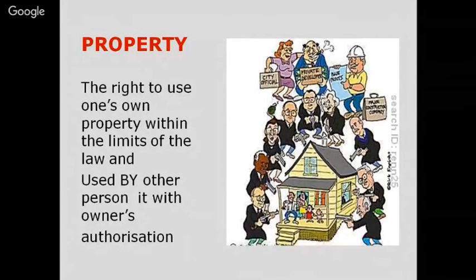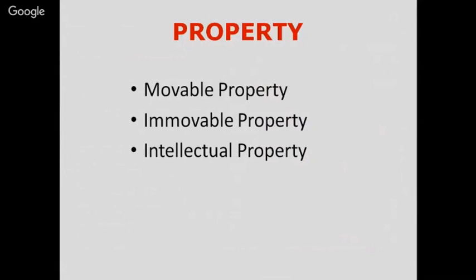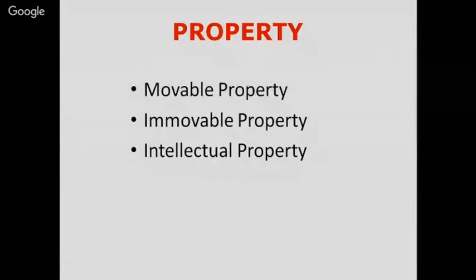Similarly, intellectual property is given the same rights. Property can be categorized into three parts: movable property, immovable property, and intellectual property. Movable property mainly consists of objects like cars or cameras where the owner has exclusive rights to use it and can authorize others to use it as well.